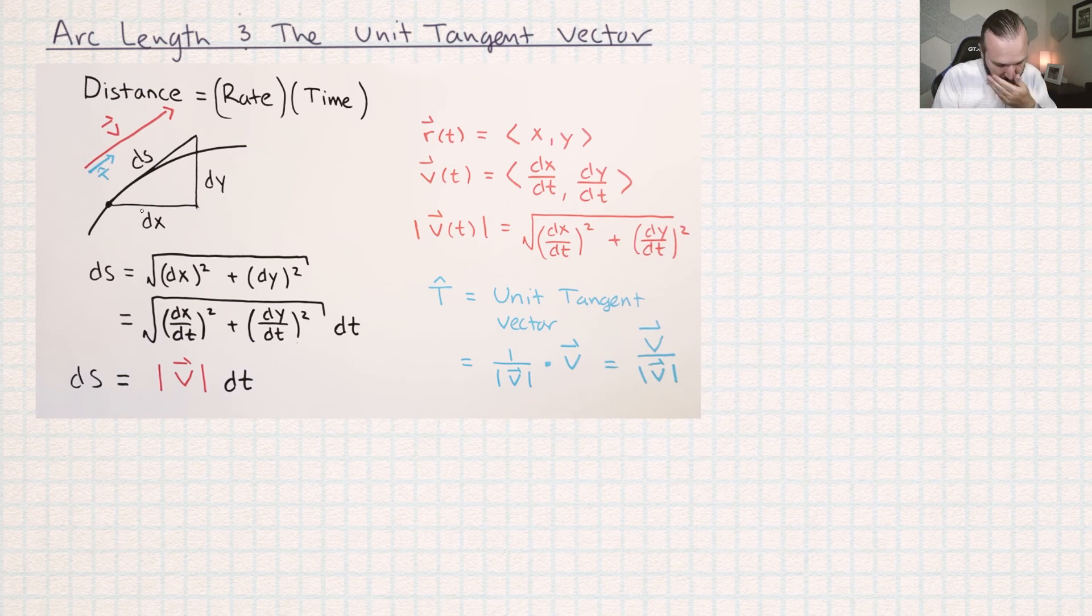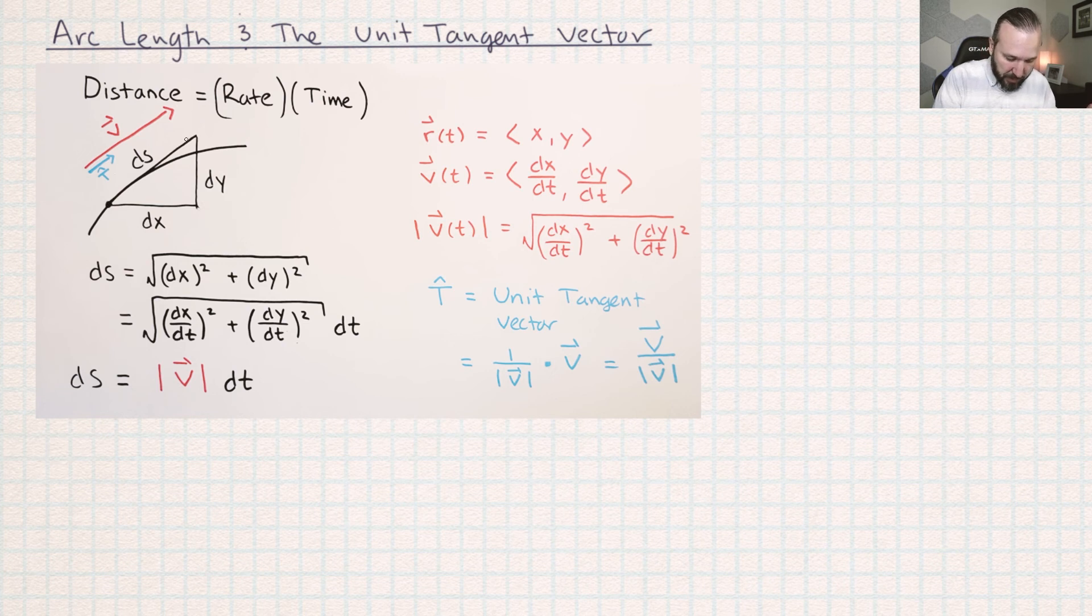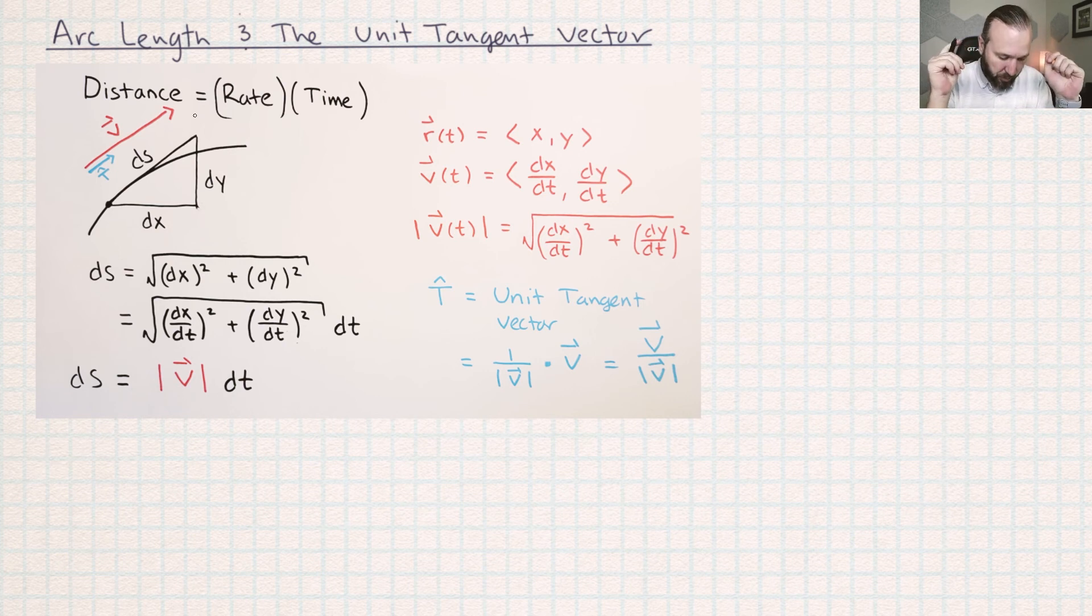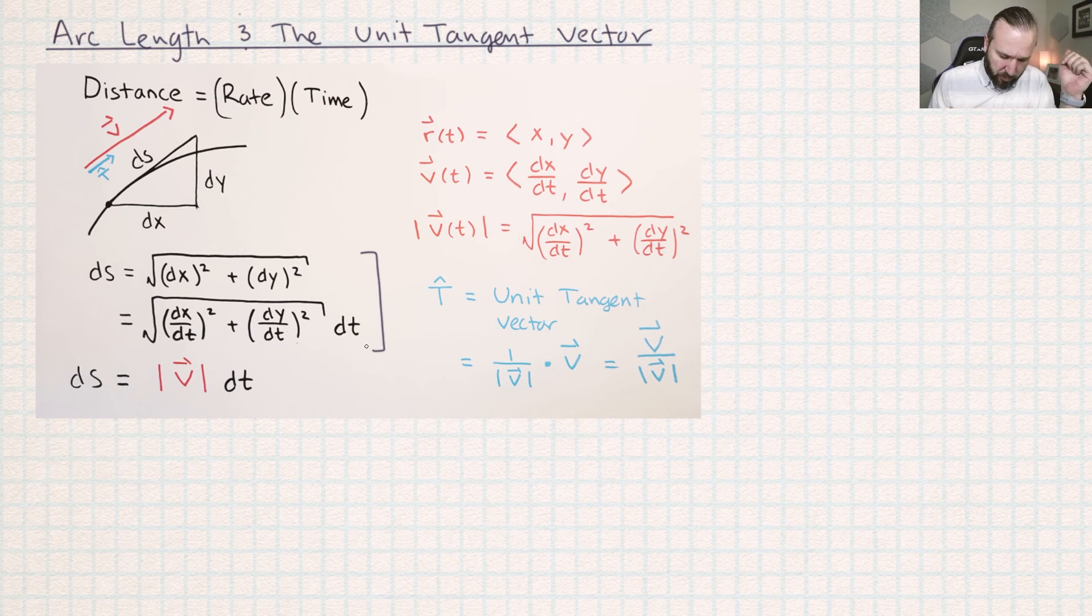So you imagine X changing by some small amount and Y changing by some small amount and that producing a tangent line approximation for the distance that the particle's traveled. And I swear I went over this in a previous video about how these two things are equivalent.